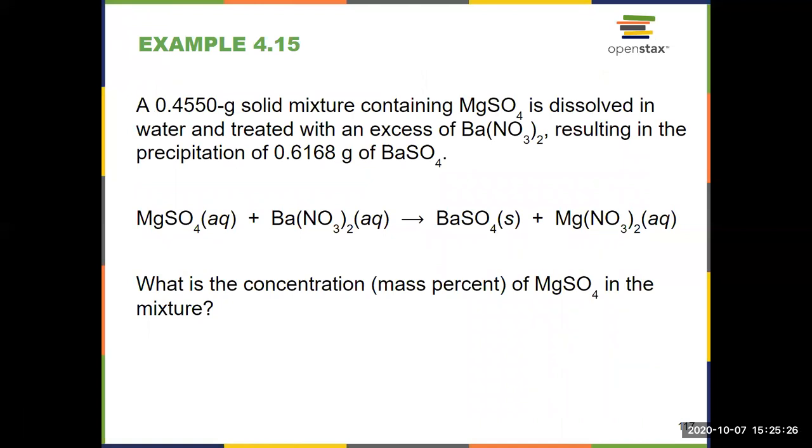So here's an example of what that might look like in a word problem. You're given 0.455 grams solid mixture that has some magnesium sulfate in it. We don't know how much, we just know it's a mixture. You can take that and treat it with barium nitrate. And when you have magnesium sulfate and barium nitrate together, they'll react and produce barium sulfate and magnesium nitrate. And when you do that reaction, in this case, it produced 0.6168 grams of barium sulfate. So given that information, we're asked to solve for the mass percent of magnesium sulfate. Again, I recommend you pause the video and try this. Good practice for Chapter 3 and 4 ideas wrapped up in one problem.